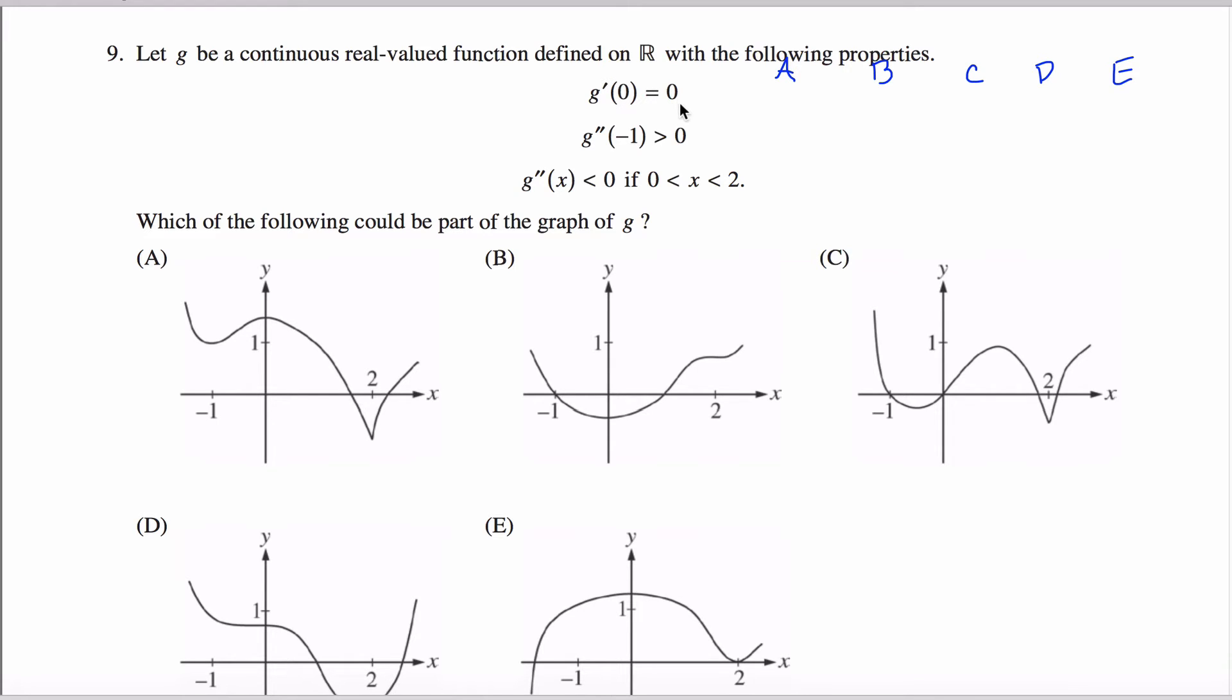G prime of zero equaling zero is telling me when my x coordinate is zero, the slope of my graph should be zero. In other words, this relates the slope of the tangent line to my graph. My graph gets flat when x equals zero. Note that right here the graph is flat, right here the graph is flat.